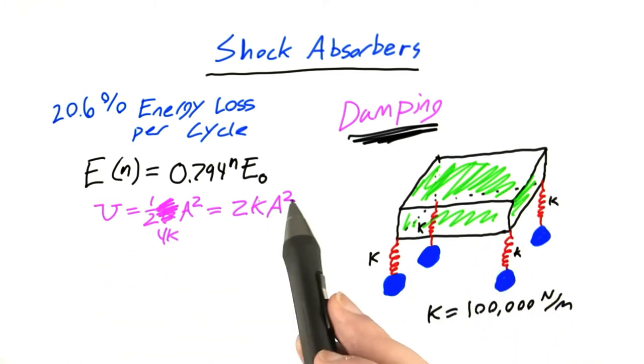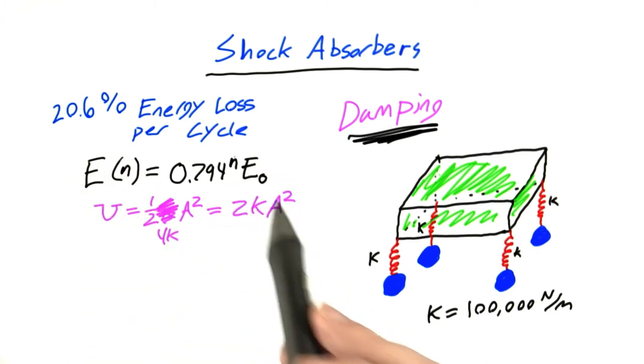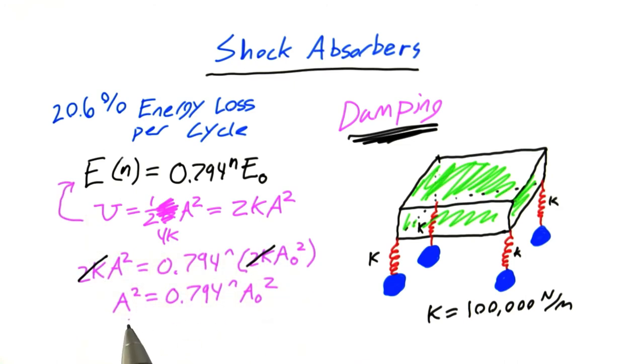So now I'm going to substitute this value for potential energy, 2kA squared, and the value for energy in our earlier equation. And doing a little math, we get that the current amplitude squared is equal to 0.794 to the n power times the original amplitude squared.